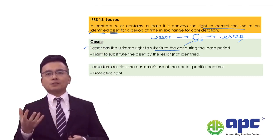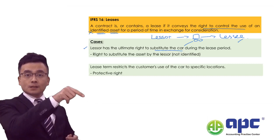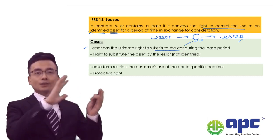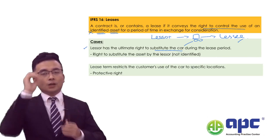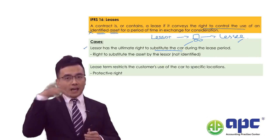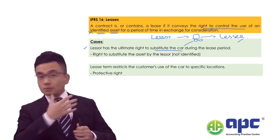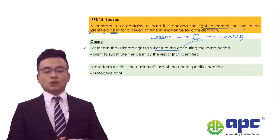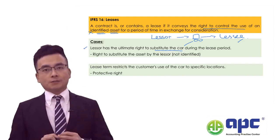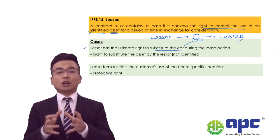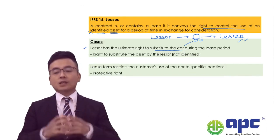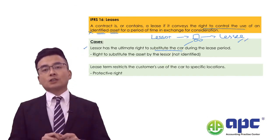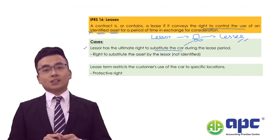What I mean by 'identified' is that I'm leasing that car and I can decide when to use it and how to use it. If in any circumstances you can substitute my car, that would be an example where the asset is not identified. This means the contract does not contain a lease, and subsequently from the lessee's point of view, there is no point in recognising the right-of-use asset or the lease liability.